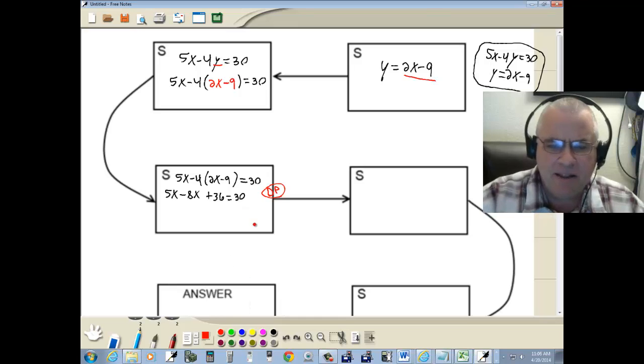We want to combine together like terms. 5x minus 8x is negative 3x. Plus 36. Equals 30.